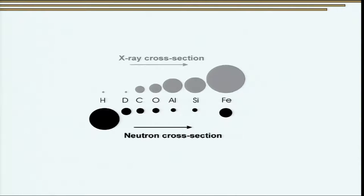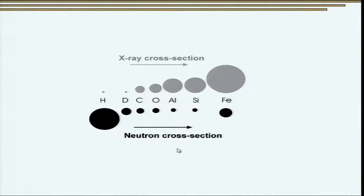These two techniques are completely complementary to each other. Looking at different elements and how neutron cross section and X-ray cross section vary, we see that materials with high X-ray cross section tend to have low neutron cross section. Therefore, in situations where a material has high X-ray cross section and high neutron cross section simultaneously, we can use both X-ray and neutron diffraction to complement each other and obtain complete information from the sample under investigation.